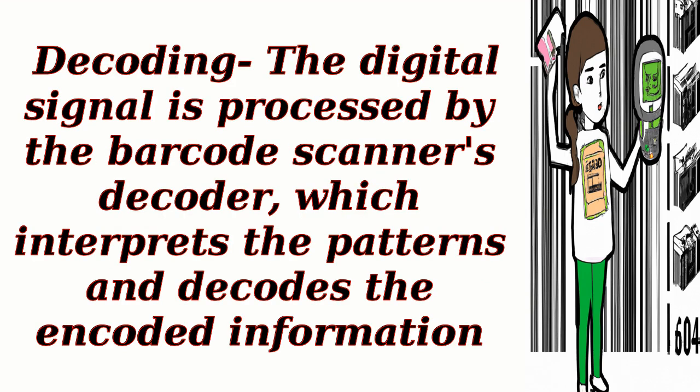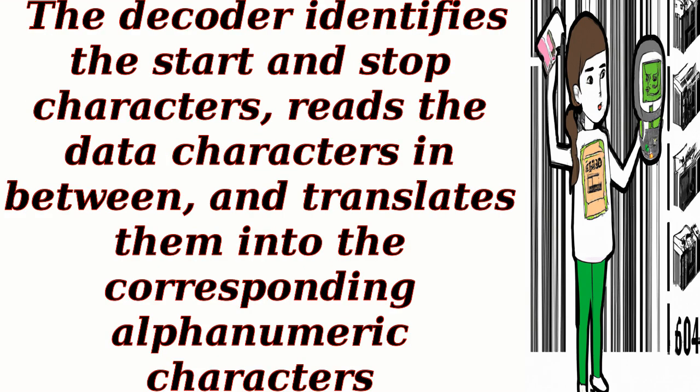Decoding: the digital signal is processed by the barcode scanner's decoder, which interprets the patterns and decodes the encoded information. The decoder identifies the start and stop characters, reads the data characters in between, and translates them into the corresponding alphanumeric characters.